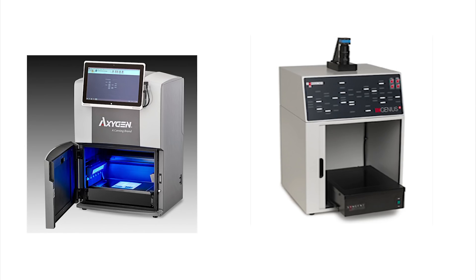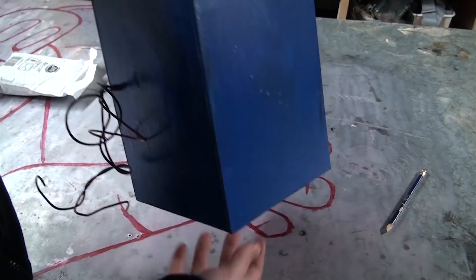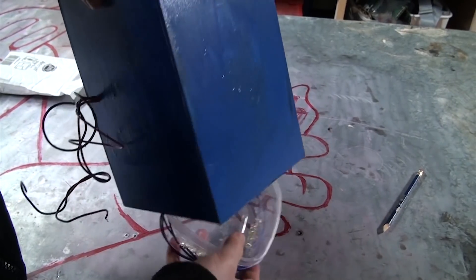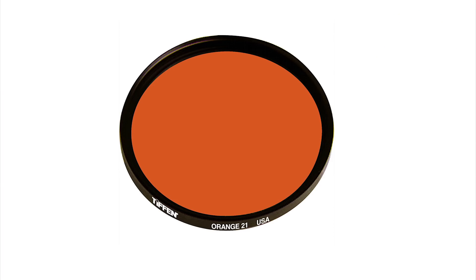Normally gel docks are crazy expensive, easily $8,000 to $12,000 if not more. And yes, it'll come with a lot of bells and whistles like a screen and automatic controls, but in essence all it is is a box with a hole in the top for a camera, a transilluminator which is just a bunch of blue or UV lights, and a filter on the camera to block that blue or UV light out.